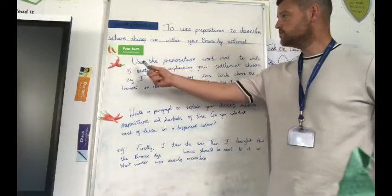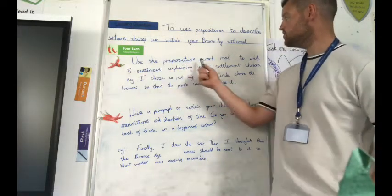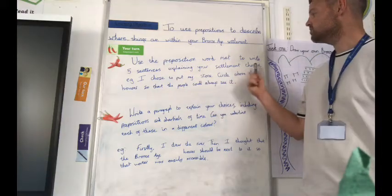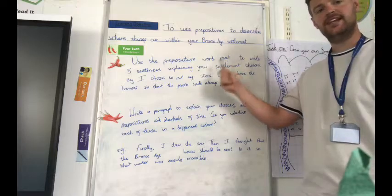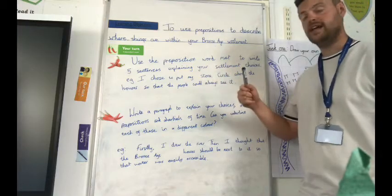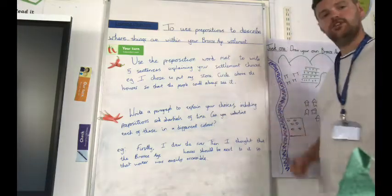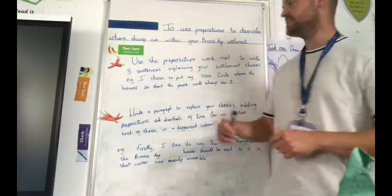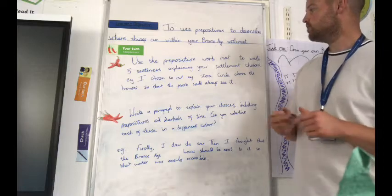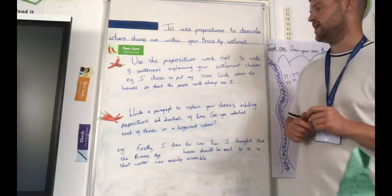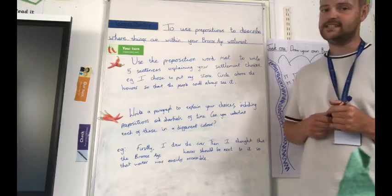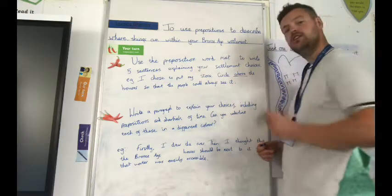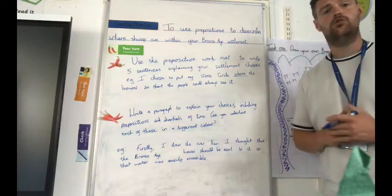Chilly two, your challenge is to use the preposition word map to write five sentences explaining your settlement choices. So, this word map is going to be sent out to you on Monday to use, and I want you to refer back to your settlement map, and then come up with five different sentences, such as this. So, it might be, I chose to put my stone circle above the houses so that the people could always see it. So, in that sentence, my preposition would be above, so if you can underline it as well, that will show great understanding.